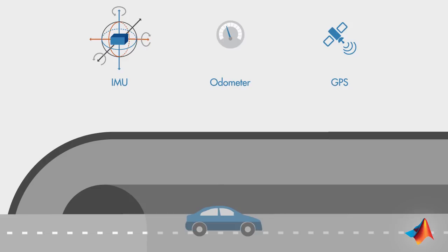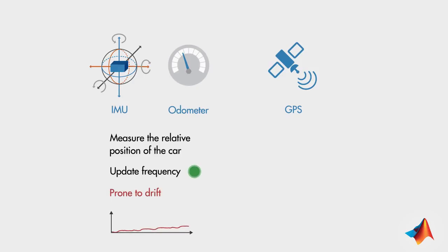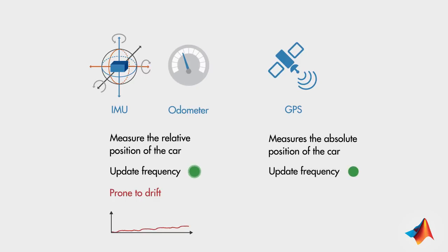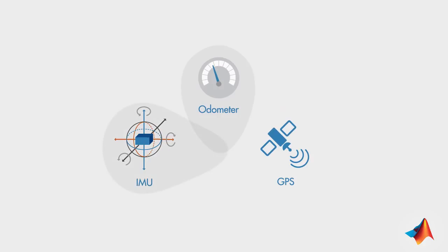To get better position estimates, you can use IMU measurements along with odometer readings. Note that odometer measurements may be affected by tire pressure and road conditions. To summarize, your sensors measuring the relative position of your car give you fast updates, but they are prone to drift. The GPS receiver provides your absolute location, but it gets updated less frequently and it may be noisy. In this scenario, a Kalman filter can be used to fuse these three measurements to find the optimal estimate of the exact position of the car.